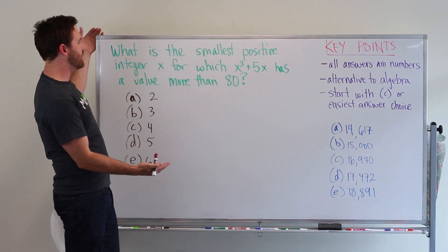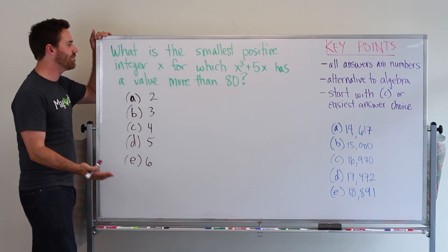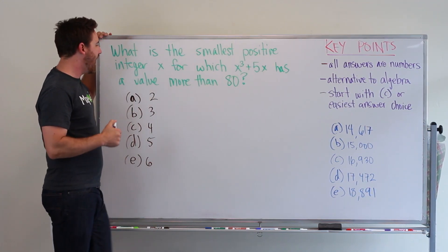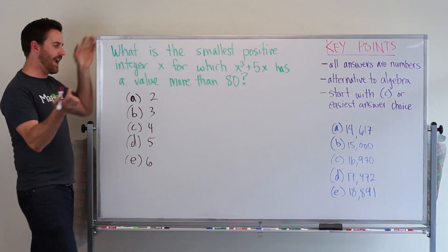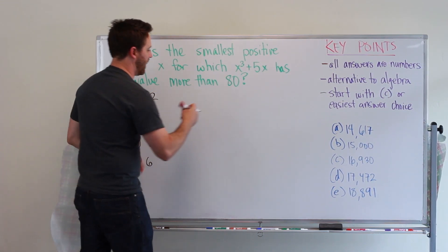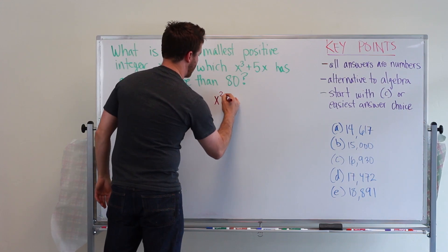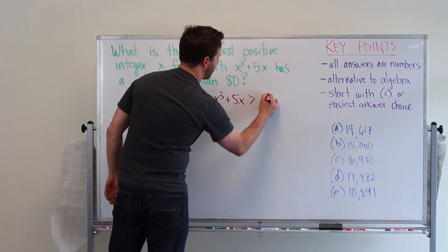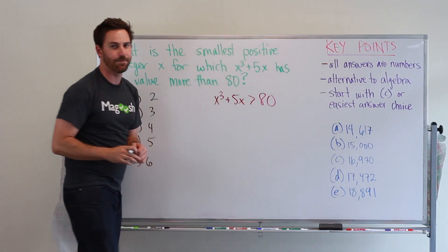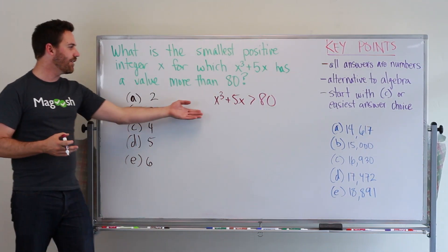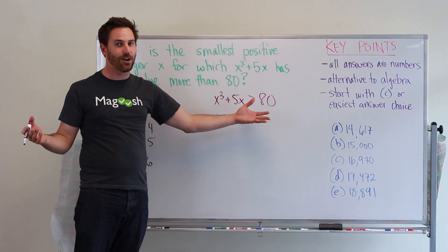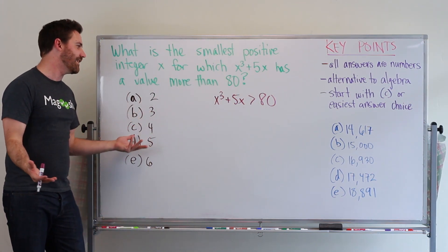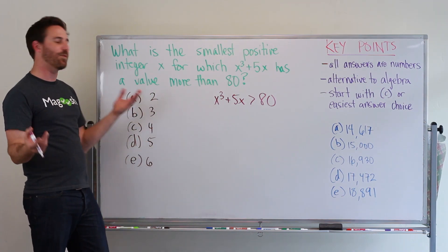And so in this case, we have a question: what is the smallest positive integer x for which x cubed plus 5x has a value more than 80? So what this is saying is what number for x gives us x cubed plus 5x, and that is greater than 80? Instead of trying to solve this algebraic equation, it's crazy town, why not just use some of these numbers, plug them in, and just see what we end up with?